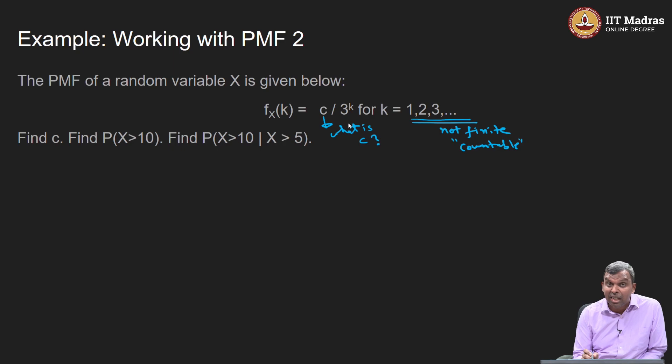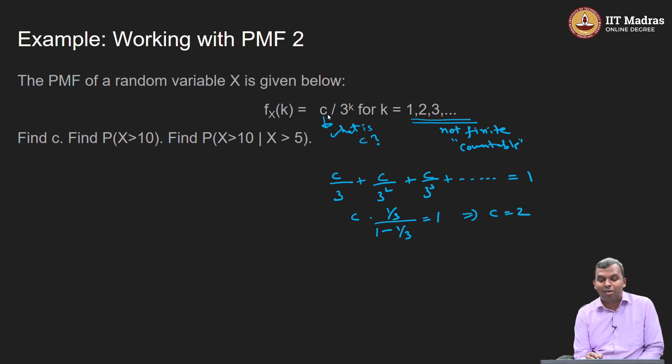Once again, it is a partially specified PMF. What do I use to find out the value of c? I know that c by 3 plus c by 3 squared plus c by 3 power 3 plus so on has to be equal to 1. Why is that? This is the condition on the PMF. You use this to find c. Here is an infinite summation, 1 by 3 plus 1 by 3 square, etc. And from the formula, it is 1/3 by 1 minus 1/3, this has to be equal to 1. It is 1/3 by 2/3 is 1 half, so c equals 2. Whenever you have a partially specified PMF like this, the first task is to go ahead and get its full specification using its properties.